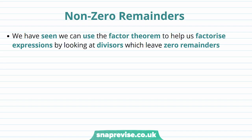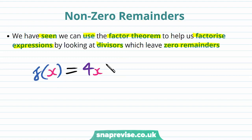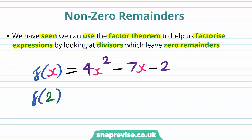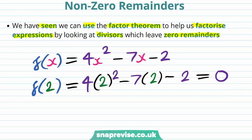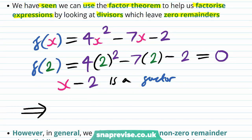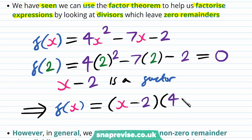Let's consider the case of non-zero remainders from a division of polynomials. We've seen that we can use the factor theorem to help us factorise expressions by looking at divisors which leave zero remainders. For example, if f(x) = 4x² - 7x - 2, then f(2) = 4(2²) - 7(2) - 2 = 16 - 14 - 2 = 0. Therefore, by the factor theorem, x - 2 is a factor of f(x), and so f(x) = (x - 2)(4x + 1).